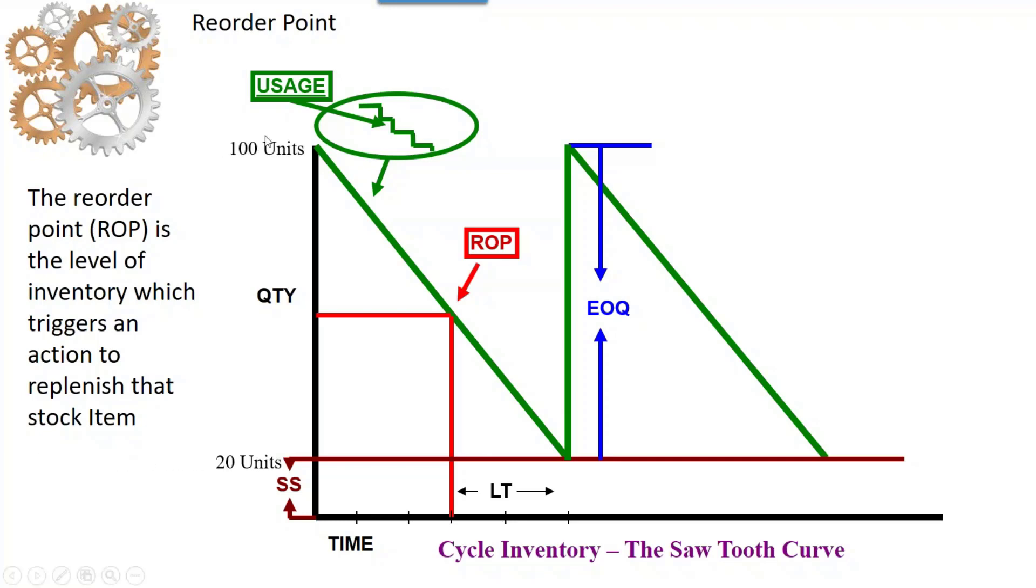If we start with 100 units and have 20 units of safety stock with a two-period lead time, we can see that the reorder point—that point at which we would launch a new order—equals 100 minus 20, which is 80, divided by five periods of consumption, meaning we consume 16 units per period.